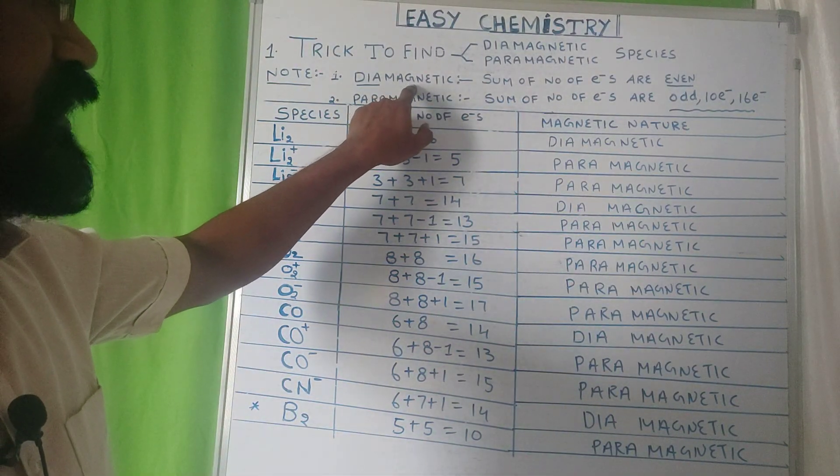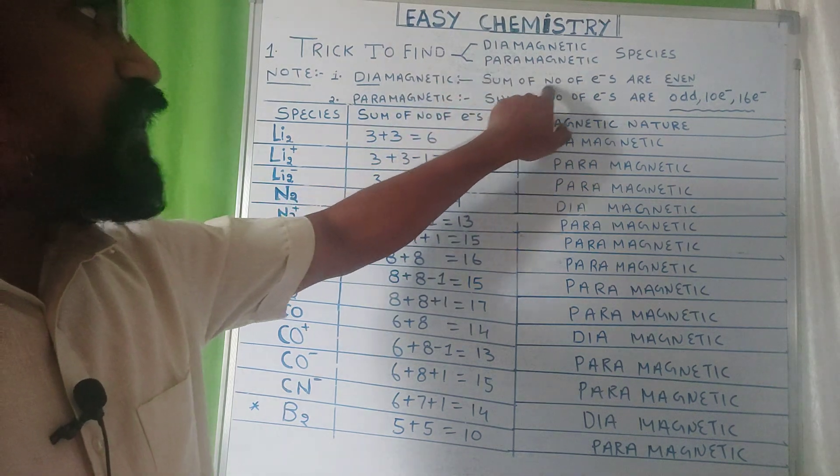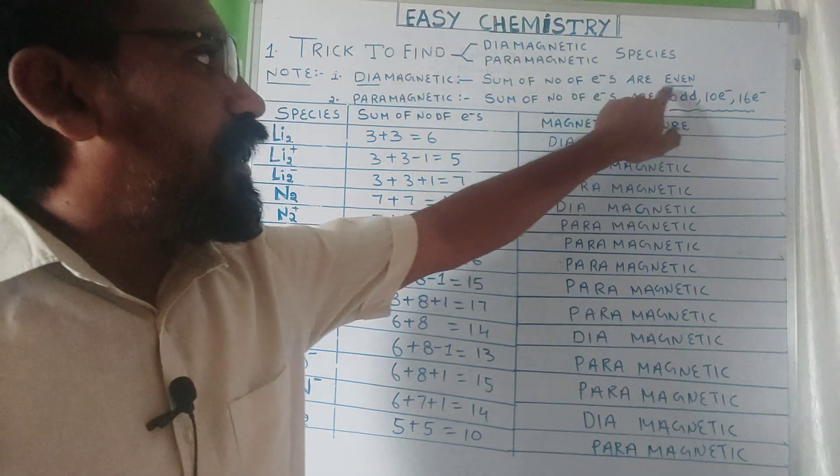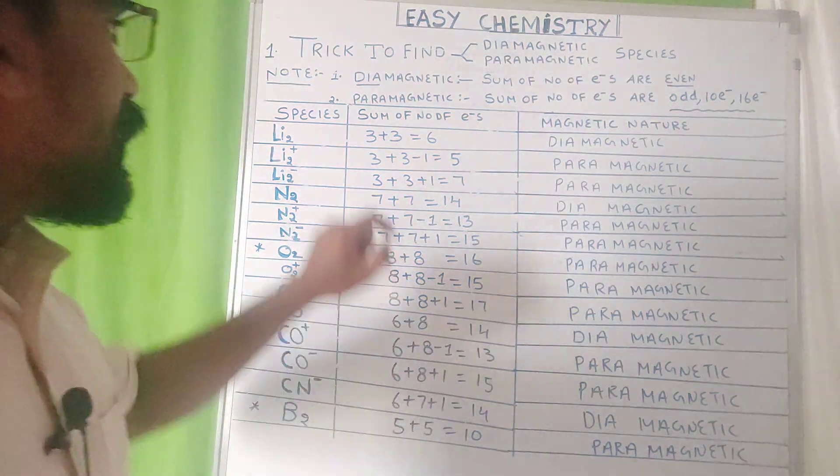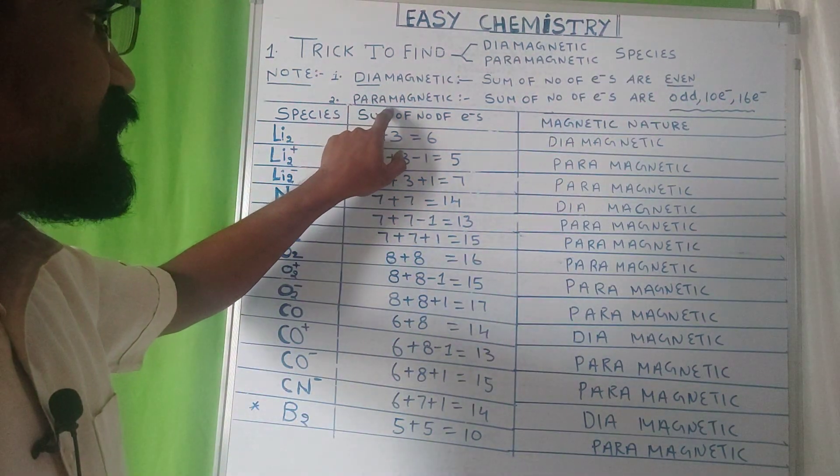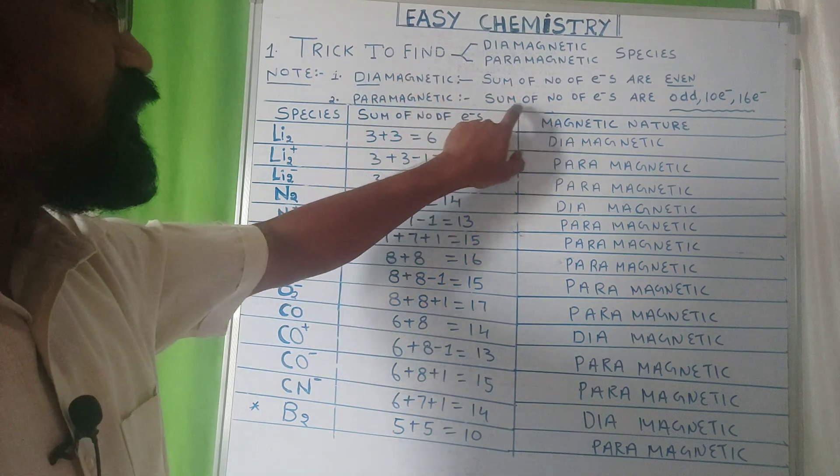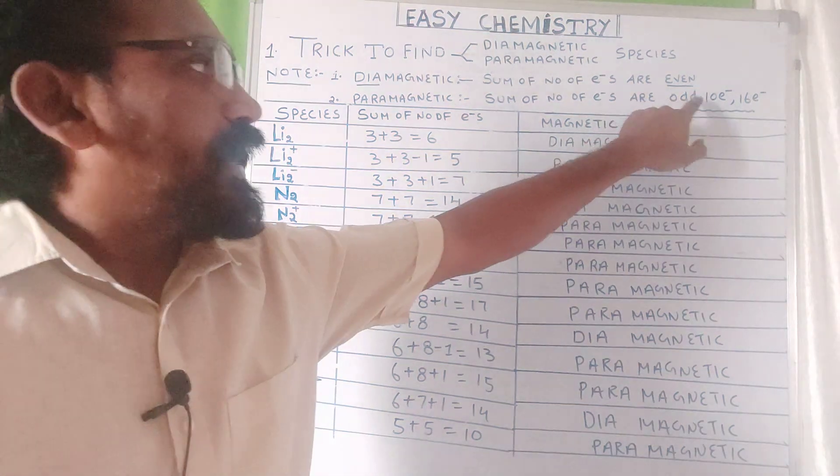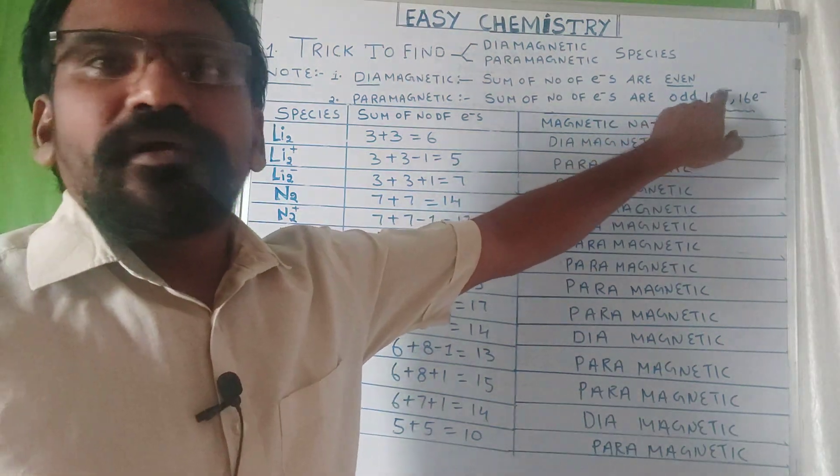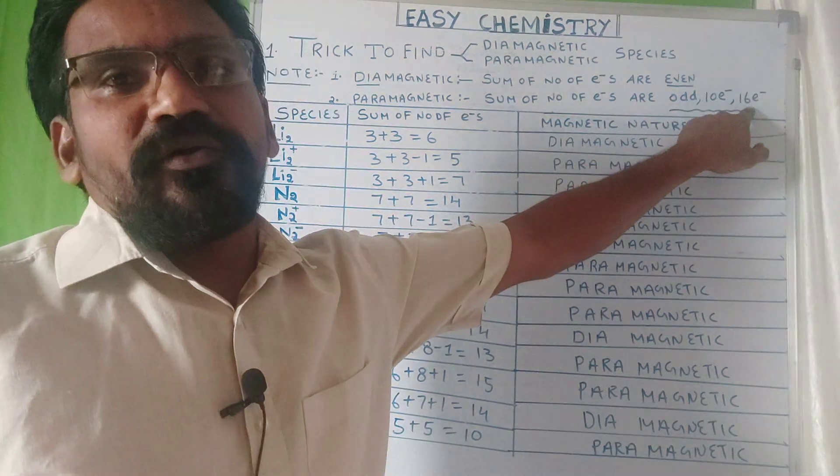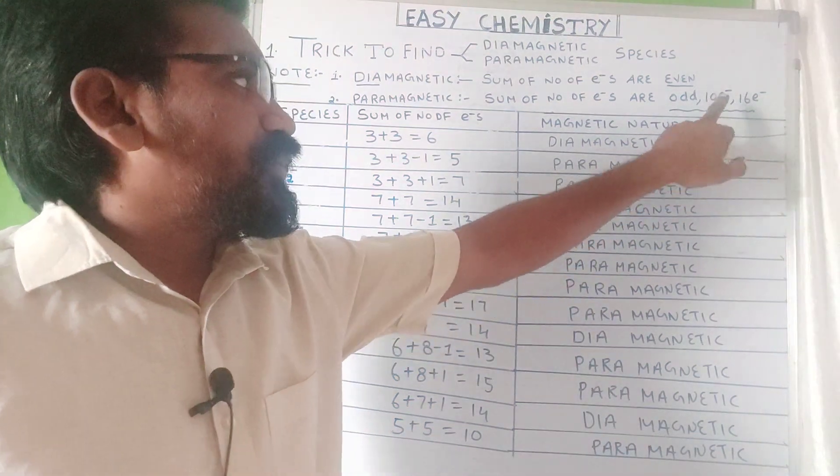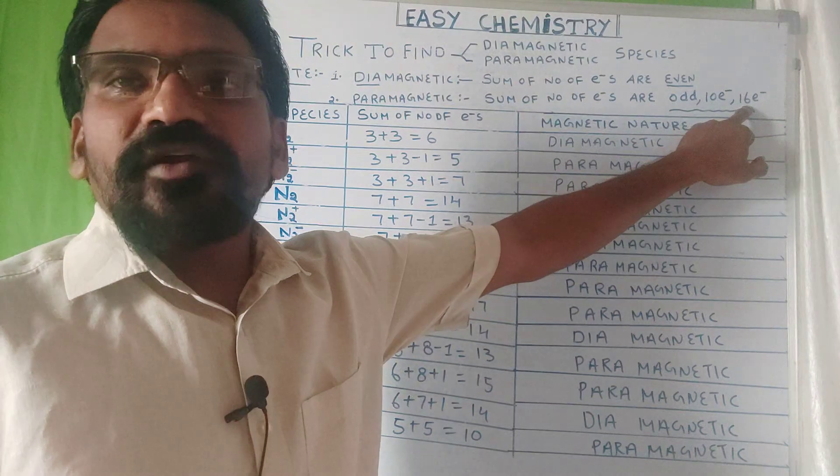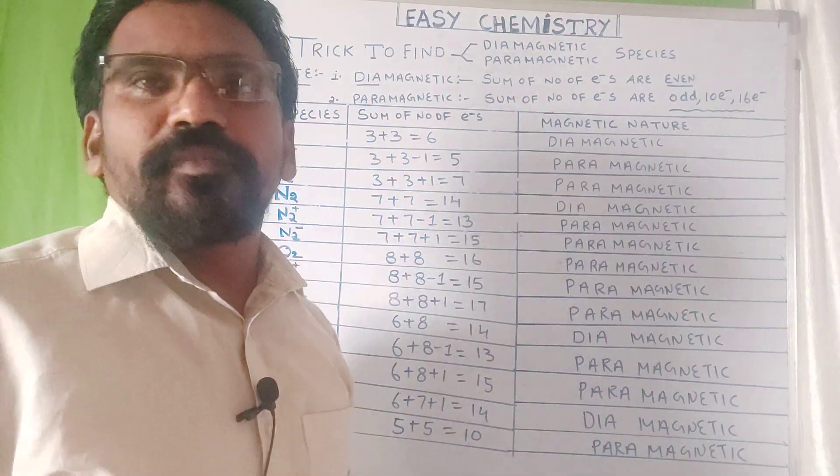For diamagnetic, sum of number of electrons in the species are even. Paramagnetic species, sum of number of electrons are odd. But 10 electrons like B2 and 16 electrons like O2 are paramagnetic according to MOT theory.